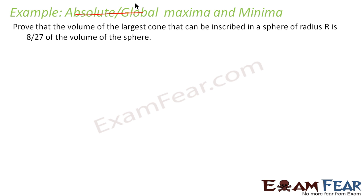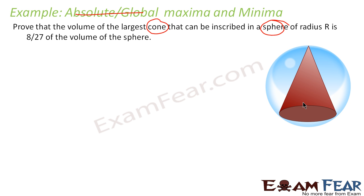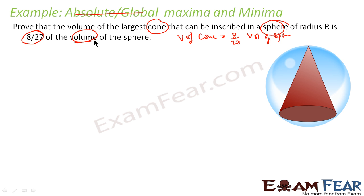We have to prove that the volume of the largest cone that can be inscribed in a sphere of radius R is 8 by 27 of the volume of the sphere. We have a sphere, and inside this sphere we are trying to inscribe a cone, and we have to find that the volume of the cone equals 8 by 27 times the volume of the sphere.